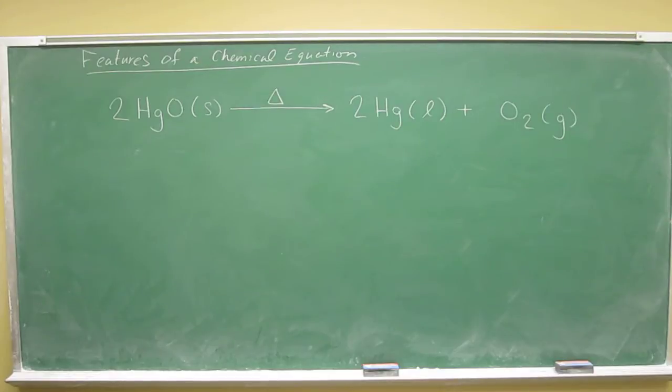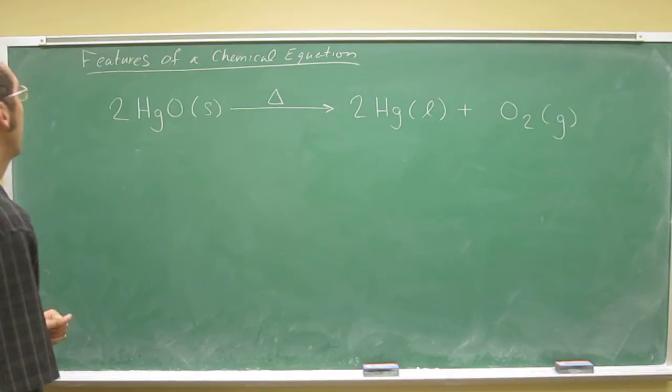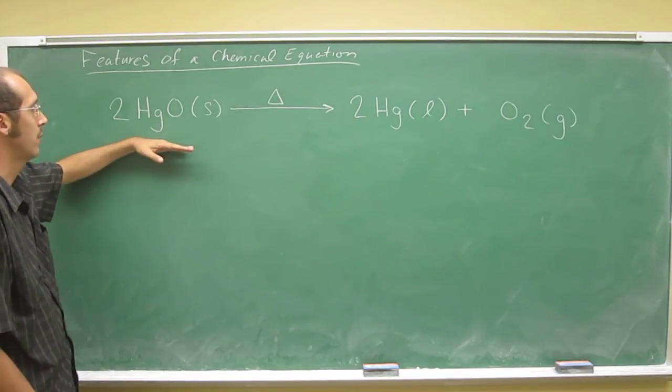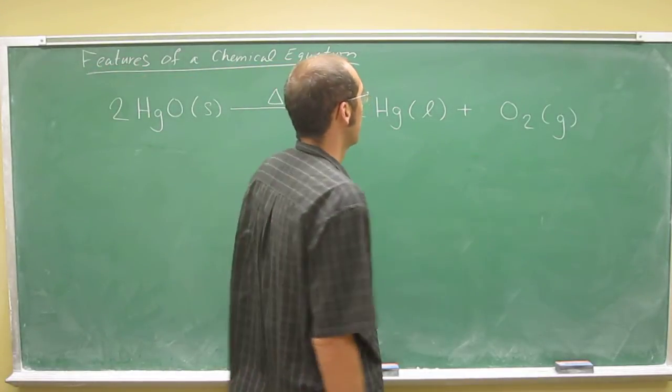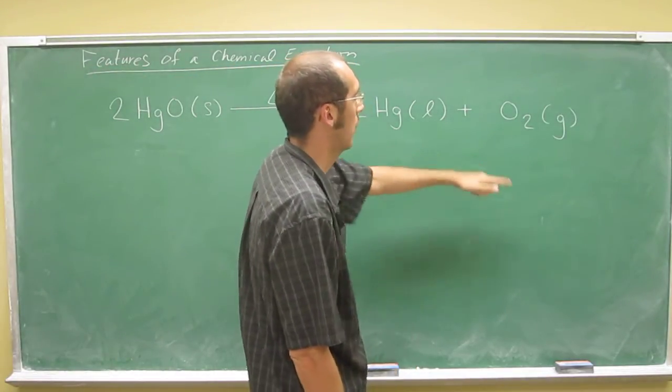In this case, we're showing a reaction as opposed to a physical change, so a chemical change. How do I know that? It's because I'm having one substance, mercury-2-oxide, go to a different substance, make a different substance that's mercury and oxygen.